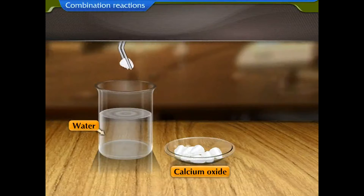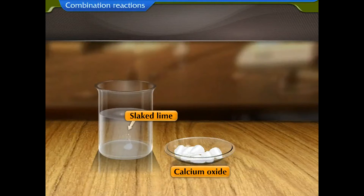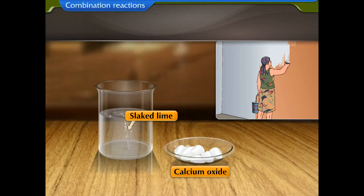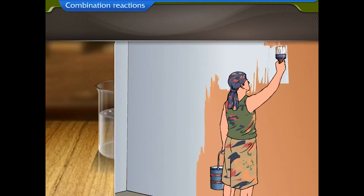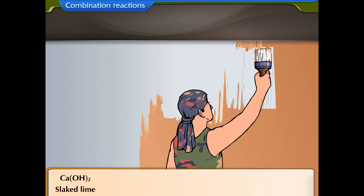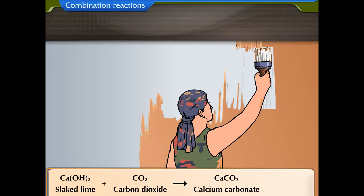Calcium hydroxide is also called slaked lime. It is used for whitewashing of walls. Slaked lime reacts with the carbon dioxide in the air to form a thin layer of calcium carbonate on the walls. This layer, after three to four days, gives a shiny finish to the walls.